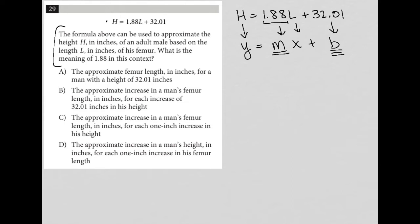So for us, Y becomes H here. M is given as 1.88. X becomes L. And B, our Y intercept, is the 32.01. So we know that this 1.88 that we're being asked about represents a slope.